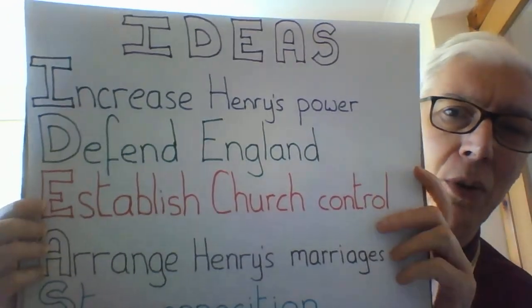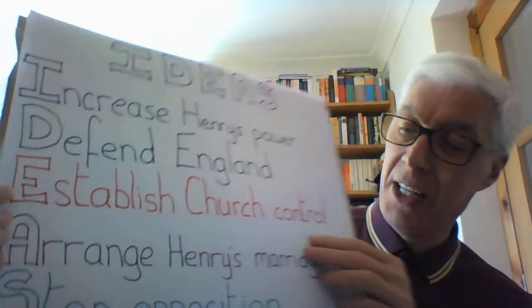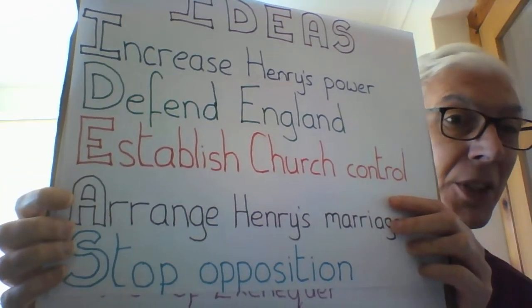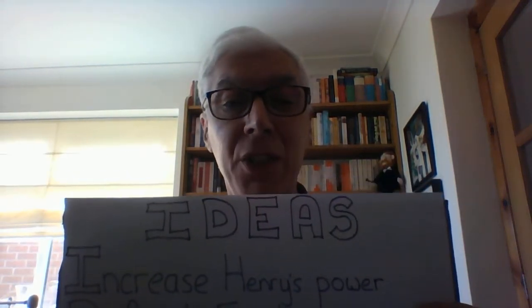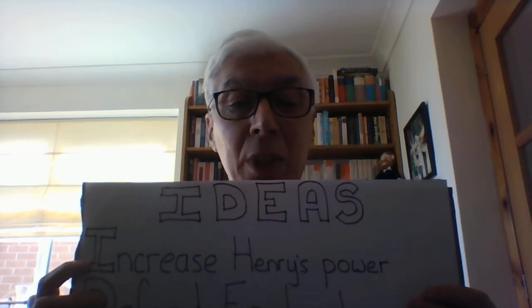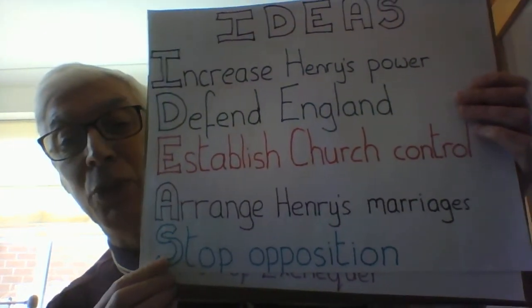Hi everyone and welcome to video number 18 on Henry VIII and his chief ministers. This video is all about Cromwell's reforms — the changes that he brought in when he was in effect King Henry's chief minister. We've already looked at how he had to arrange Henry's marriages. In this video, we're going to look at what reforms he brought in which helped to increase Henry's power and what he did to try and stop the opposition.